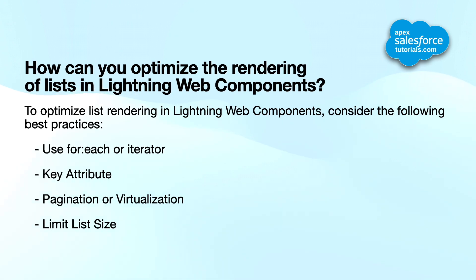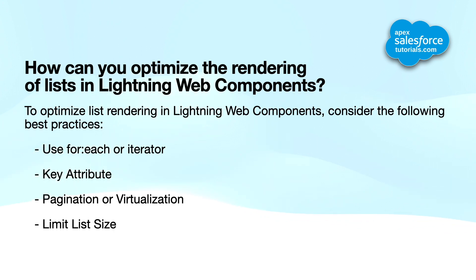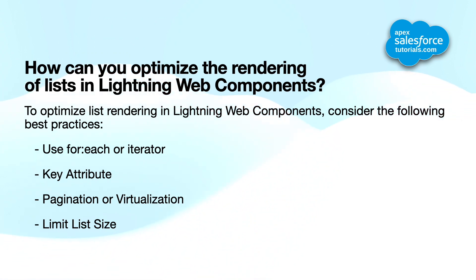The next question is: how can you optimize the rendering of lists in Lightning Web Components? Best practices include: first, use for:each or iterator directives to iterate over list data and render items efficiently. Second, ensure each list item has a unique key attribute to optimize DOM re-renders. Third, implement pagination or virtualization techniques for large data sets to prevent performance degradation. Fourth, avoid rendering an infinite number of list items and provide pagination or filtering mechanisms to improve user experience.